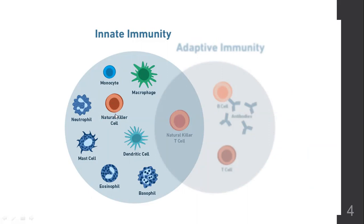At a cellular level, the different cells that are part of your innate immunity include: monocyte, macrophage, natural killer cell, neutrophils, mast cell, eosinophils, basophils, and dendritic cells. Monocyte, neutrophil, eosinophil, basophils, and macrophages are all different types of white blood cells — there are almost five types. You are born with white blood cells. Dendritic cells are found in the central nervous system and tackle infection the same way white blood cells do.